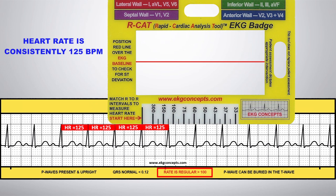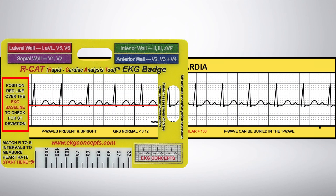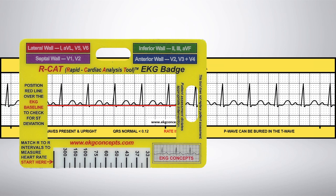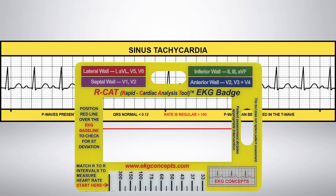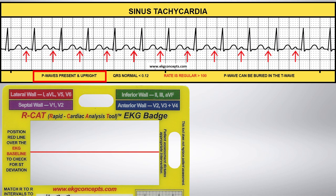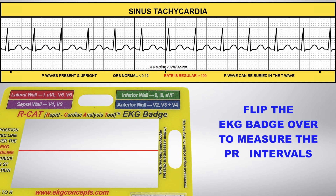Position the badge to slide the red line over the EKG baseline to look for ST deviation. Here there is no ST deviation. Notice that all the P waves are present and upright.